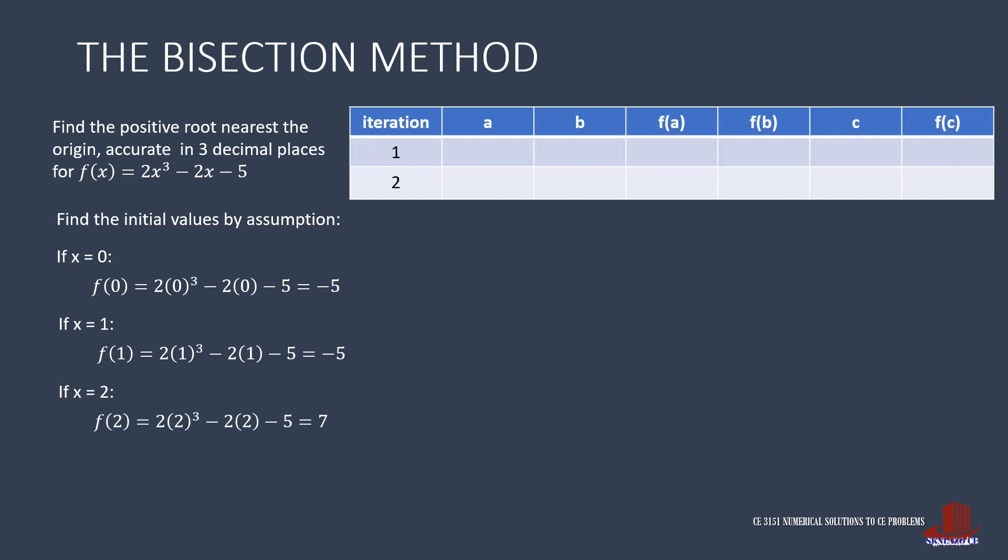Now try x as 2. We get F of 2 as twice of 2 cubed minus 2 times 2 minus 5, resulting positive 7. With a jump of negative 5 to positive 7, we take 1 and 2 as the initial limits.